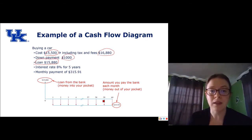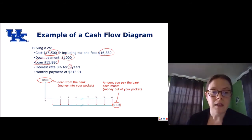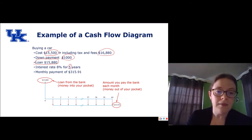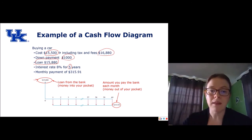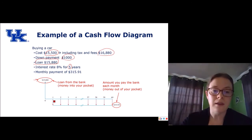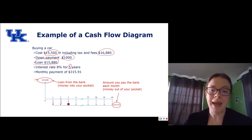So 60 months. This amount here — $15,880 — that's the loan from the bank, so it's considered money in your pocket and is a positive value. Then the amount you pay the bank each month is shown at the bottom with arrows that point down, because those are payments that you're making.